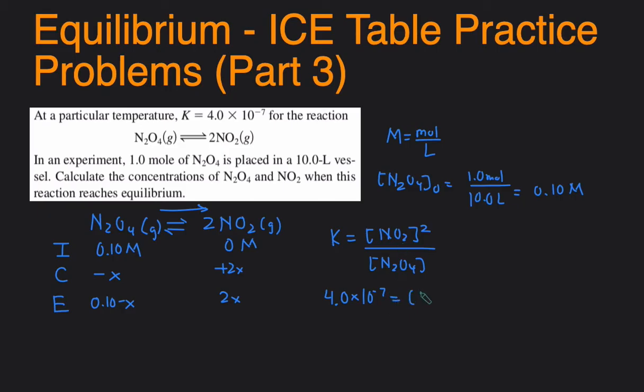Substitute the K value in and substitute the equilibrium variables. K is 4.0 times 10 to negative 7 equals the concentration of NO2 was 2x. So 2x squared, because they're squared here, divided by the concentration of N2O4, which is 0.10 minus x.